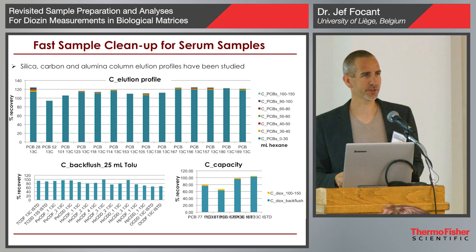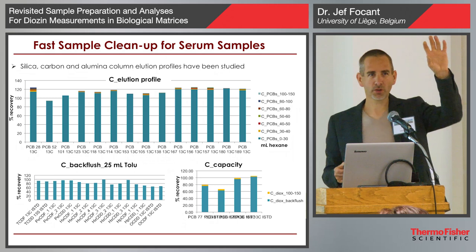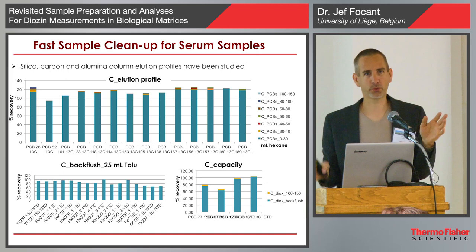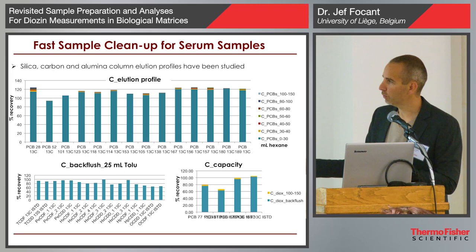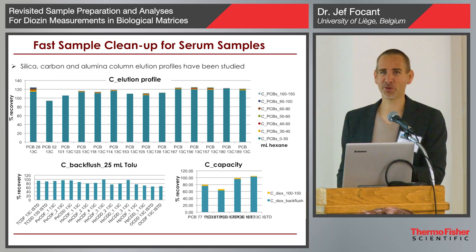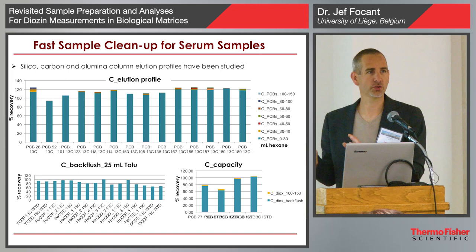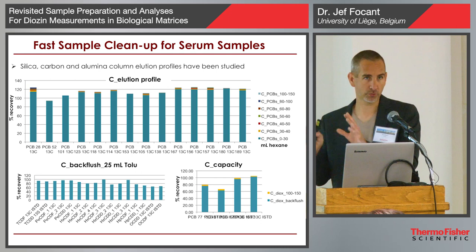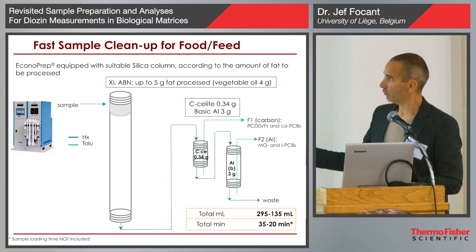Chiara went really in detail into the fractionation process. She wanted to be absolutely sure that when you flush the carbon column with hexane in the forward direction, none of the planar species would go through — that this is a fully efficient trap. She did a lot of elution profiles. We can really say that the fractionation is efficient. We are following the EU legislation, which is very strict for food and feed. In terms of recovery rates and all QA/QC parameters, we are in line with that.